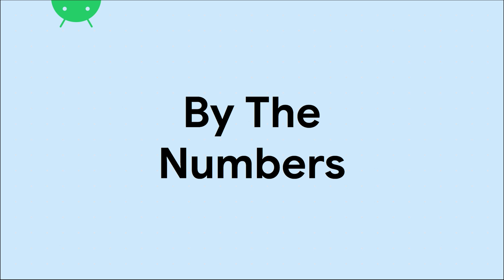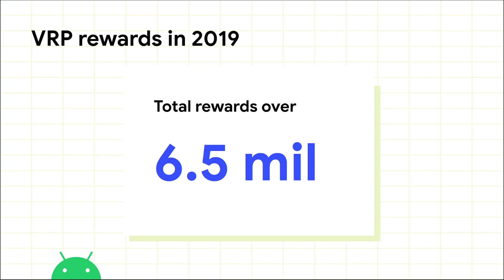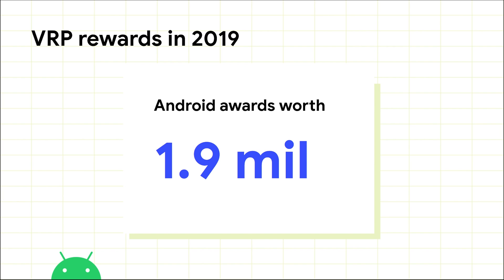As we have for many years now, we'd like to share an updated set of statistics about how we measure security across Android. In 2019, the total amount awarded to security researchers who submitted vulnerabilities to one of our vulnerability rewards programs was $6.5 million US dollars — almost twice the $3.4 million that Google awarded in 2018. The Android-specific vulnerability rewards program awarded $1.9 million US dollars during 2019, up from 2018's $1.7 million.